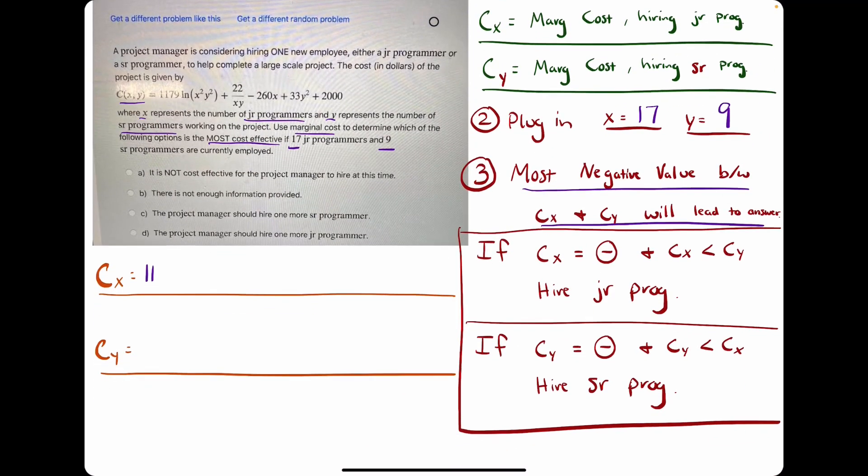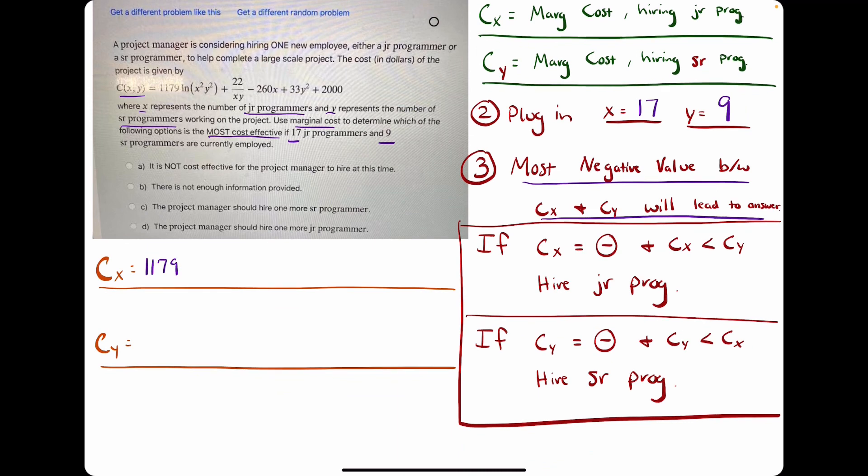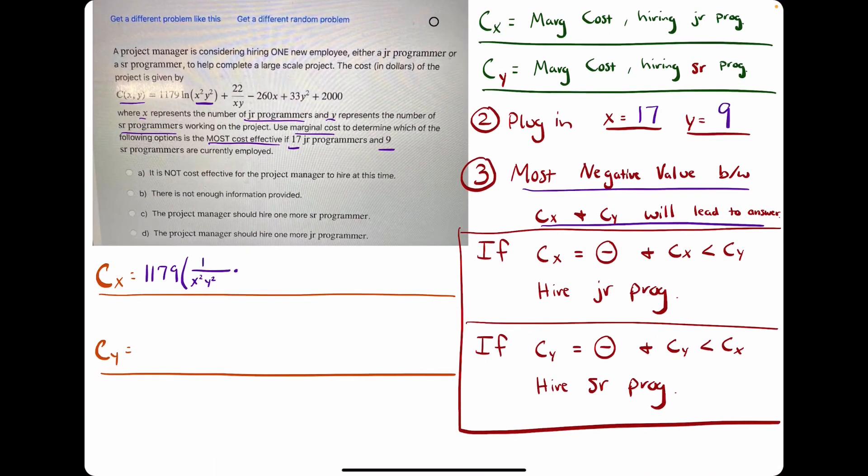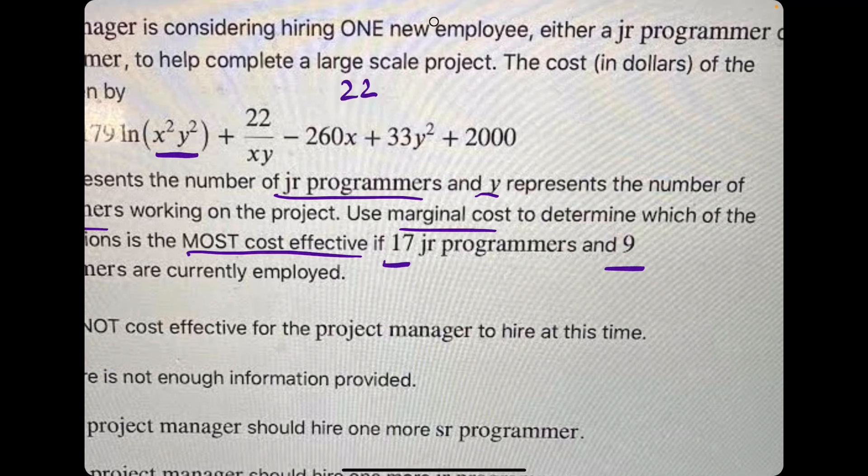Derivative of this function with respect to x, we keep the 1179. Ln of anything, the derivative is 1 over that anything, so 1 over x squared y squared. And then we have to multiply by the derivative of the inside with respect to x. x squared goes to 2x, and y squared gets carried along, since it's multiplied by x squared at the start.